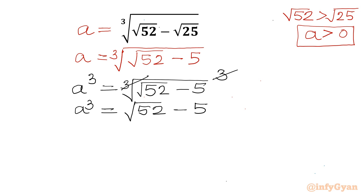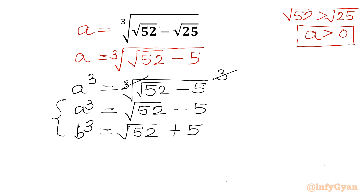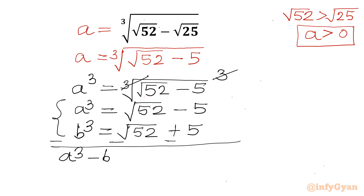Now let's consider b cubed, which will be the conjugate of a cubed: square root 52 plus 5. Now we have two equations. I will subtract them — left hand side it will be a cubed minus b cubed, and on the right hand side minus 10 will be there.